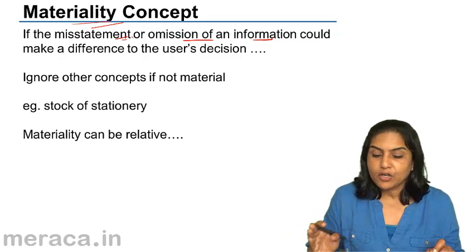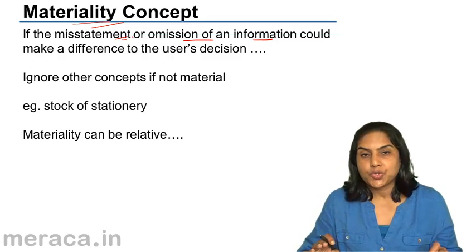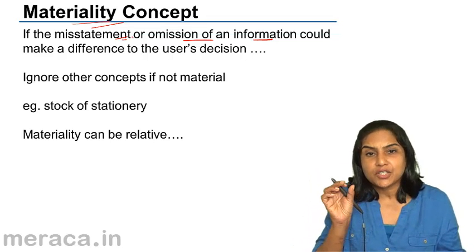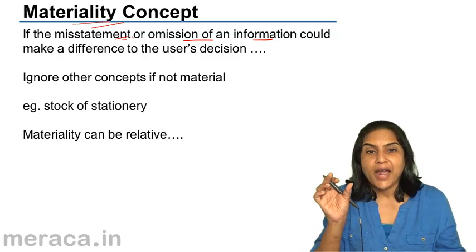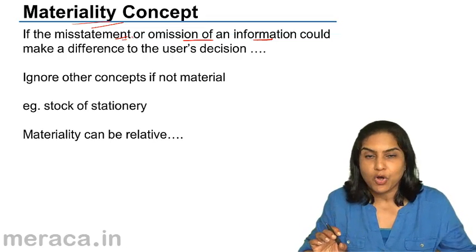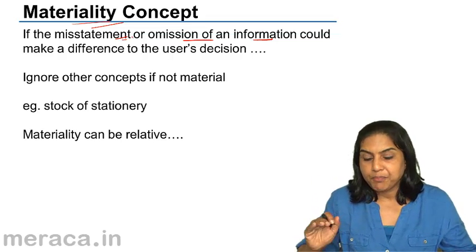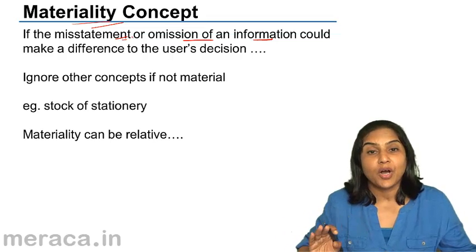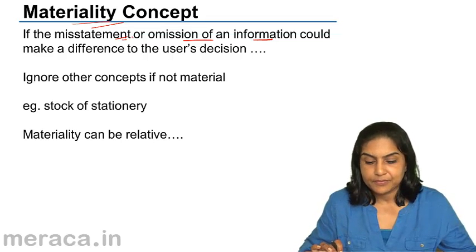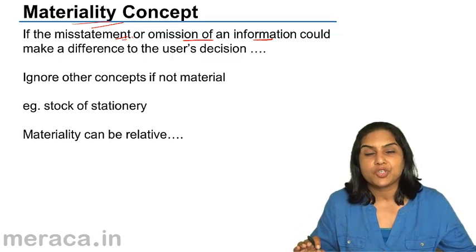Similarly, materiality can also be relative. Suppose a business is making a very marginal, small amount of profit, and if an item of expense has been omitted — even if the item of expense is small — if we include that item of expense, the profit will be converted to a loss. It would become material. So materiality may vary from organization to organization and from situation to situation.